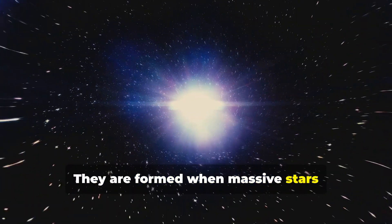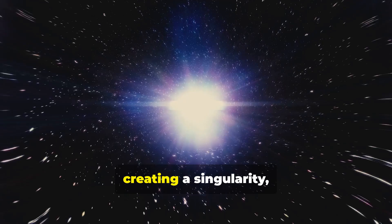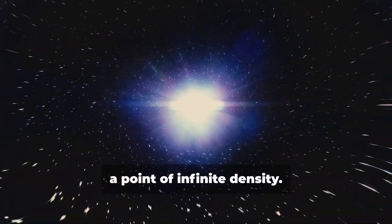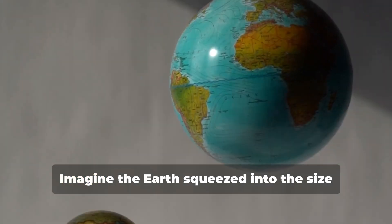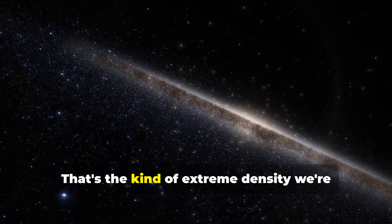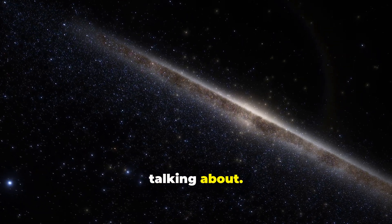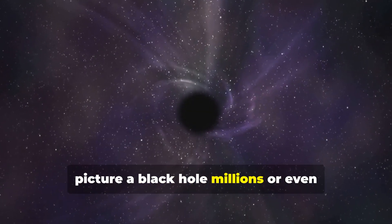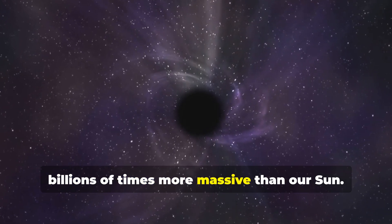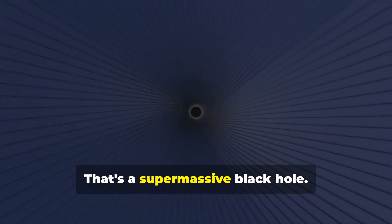They are formed when massive stars collapse at the end of their lives, creating a singularity, a point of infinite density. Imagine the Earth squeezed into the size of a marble. That's the kind of extreme density we're talking about. Now picture a black hole millions or even billions of times more massive than our Sun. That's a supermassive black hole.